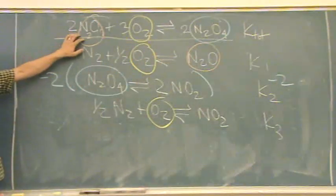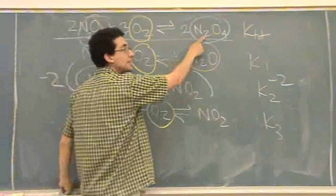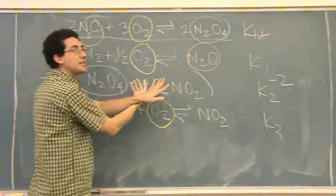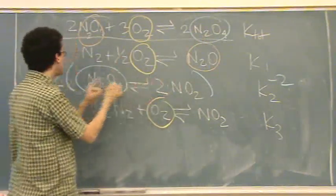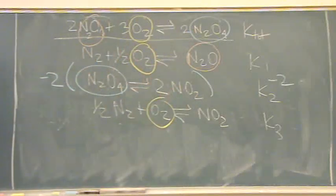Next. What's that? Why is it negative 2? Oh, because I need it in the products. So the negative means I'm flipping the reaction, and the 2 means I have a 2. I need the same coefficient.